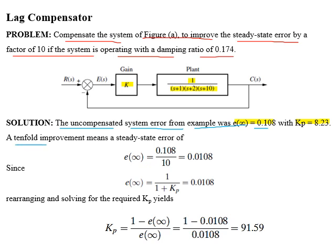The example requires a 10-fold improvement in steady-state error, so the required steady-state error will be 0.0108. Corresponding to this error, we find the static error position constant from the relation of steady-state error. Rearranging and solving for the position constant, we find that the static error position constant corresponding to a steady-state error of 0.0108 equals 91.